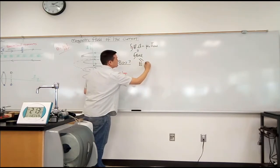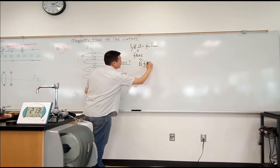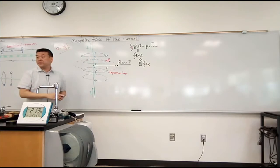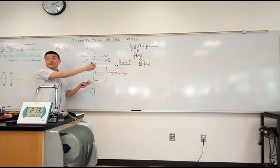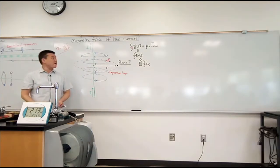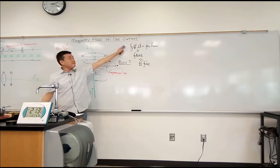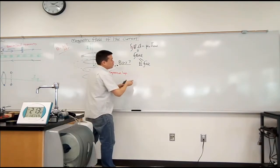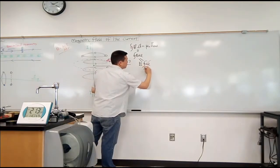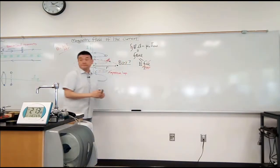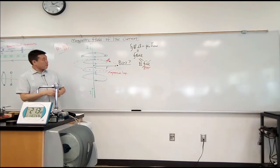So you can pull out B, so you have B times the integral DL. Well, what is this integral of DL? Just the circumference of the circle, right? So just like with Gauss's law, we start by pretending that we are going to do some integral, and we are going to find some way not to do it. Because I don't actually have to do the integral. I know this is circumference 2πr.